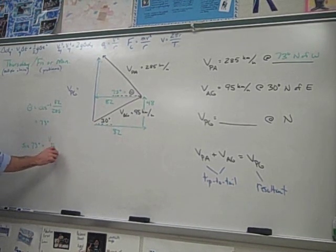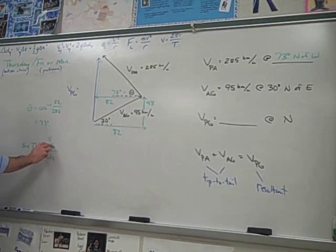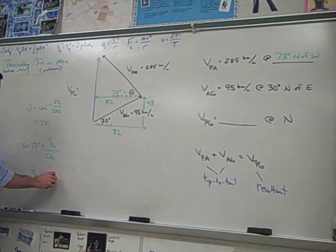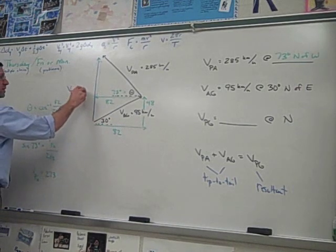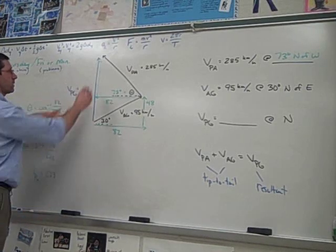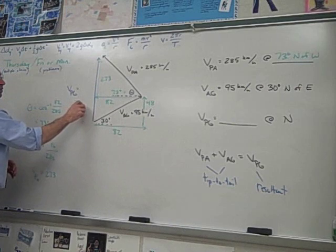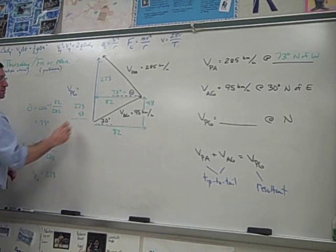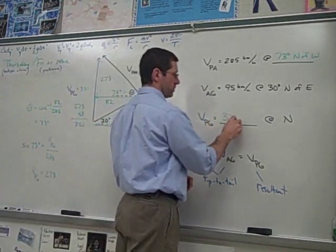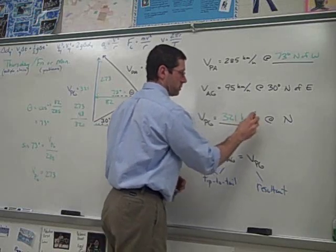Sine 73 equals VPG over 285. And so then the plane to the ground speed is 273. This is 273, but then 273 plus 48 gives us 321. So that goes here: 321 kilometers per hour due north.